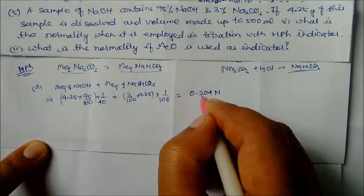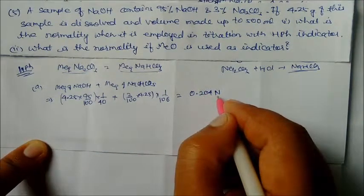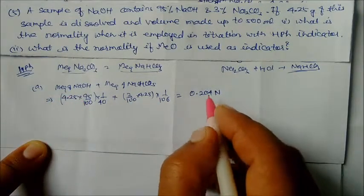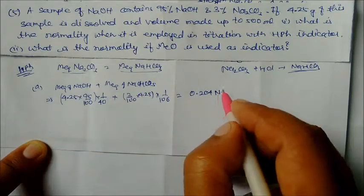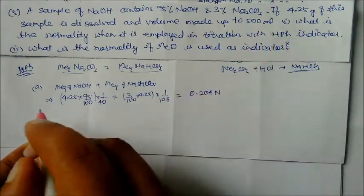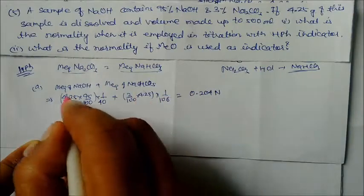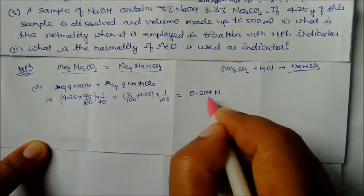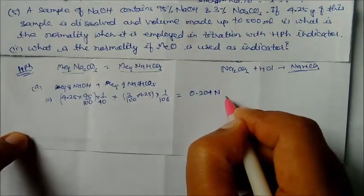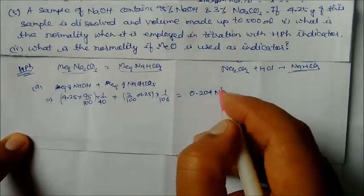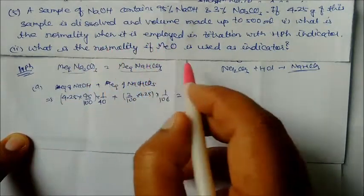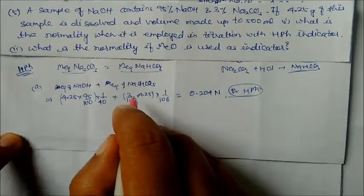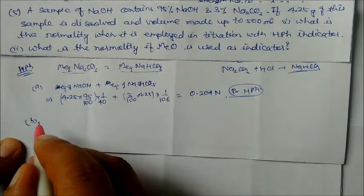With volume 500 ml also given, the normality comes out to 0.204 N. This is the normality when employed in titration using phenolphthalein indicator.